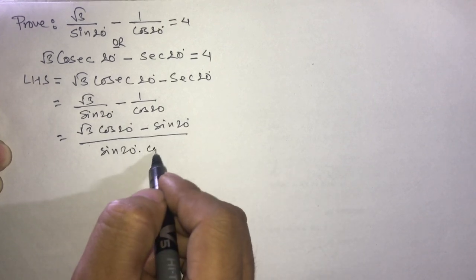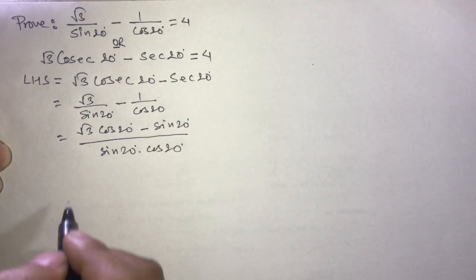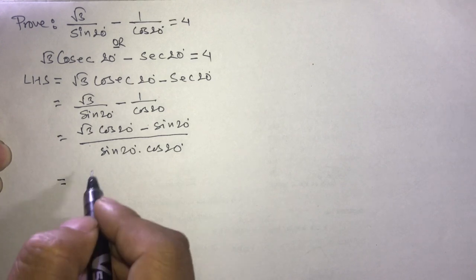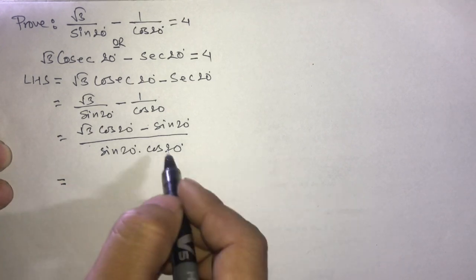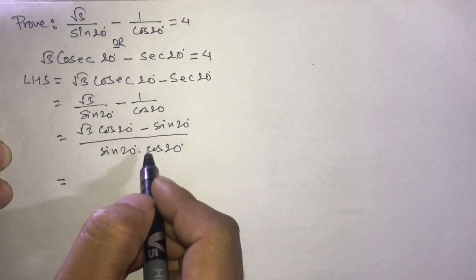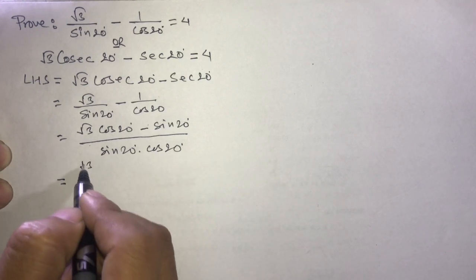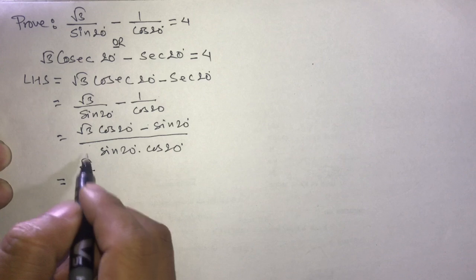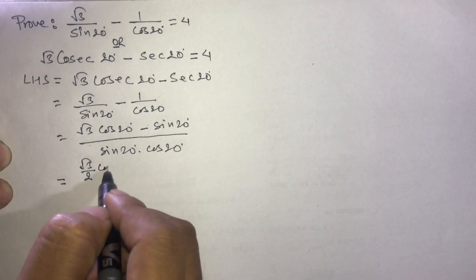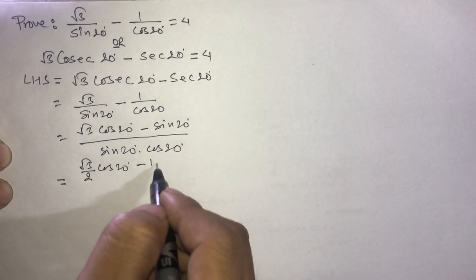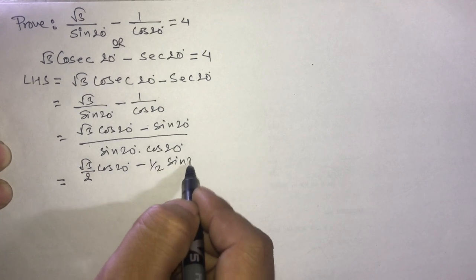Now multiply denominator and numerator by 1 by 2. We will get root 3 by 2 cos 20 minus 1 by 2 sine 20, divided by 1 by 2 sine 20 dot cos 20.